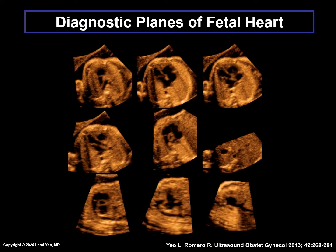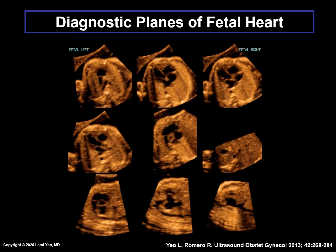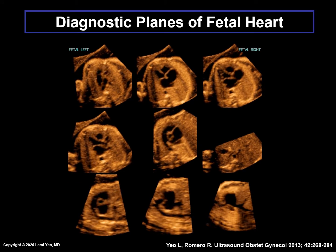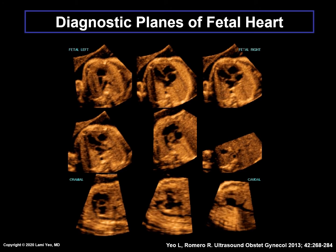Here are the nine cardiac diagnostic planes displayed in a single template. For the purposes of this presentation, the various features of automatic labeling with FINE are shown in sequence. This can be seen for the fetal left and right sides, cranial and caudal ends or direction, each diagnostic plane, and finally the anatomical structures.